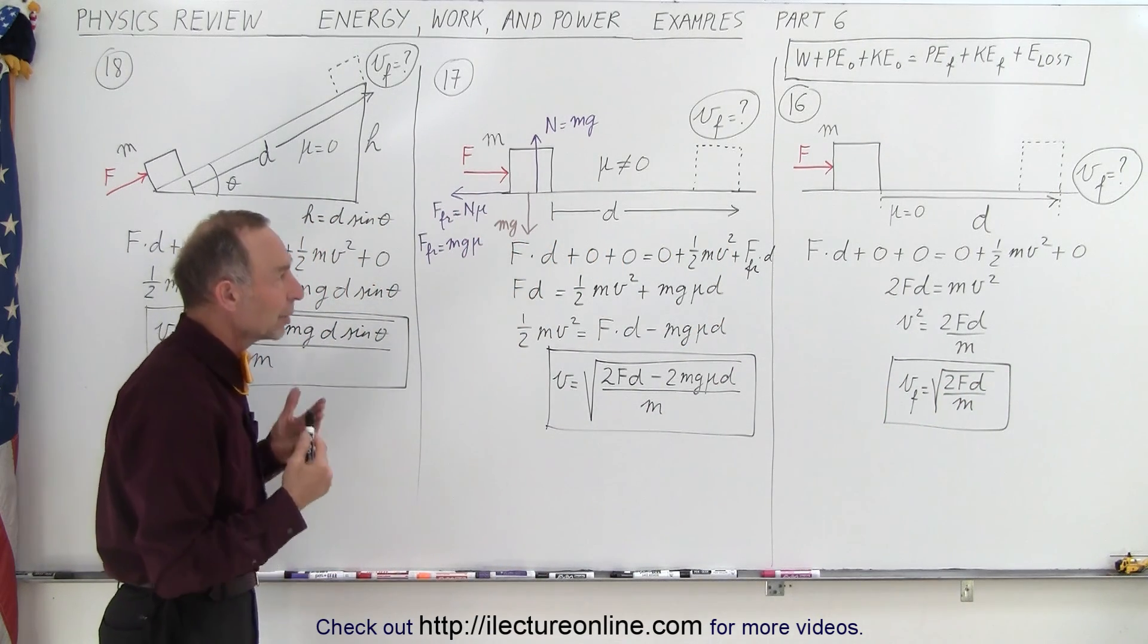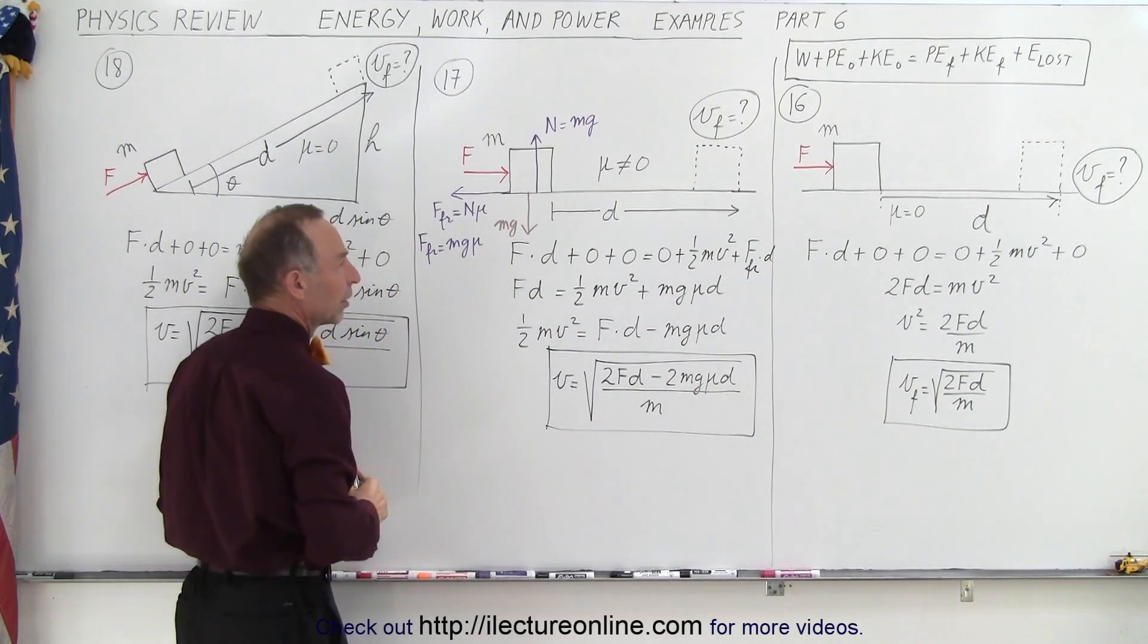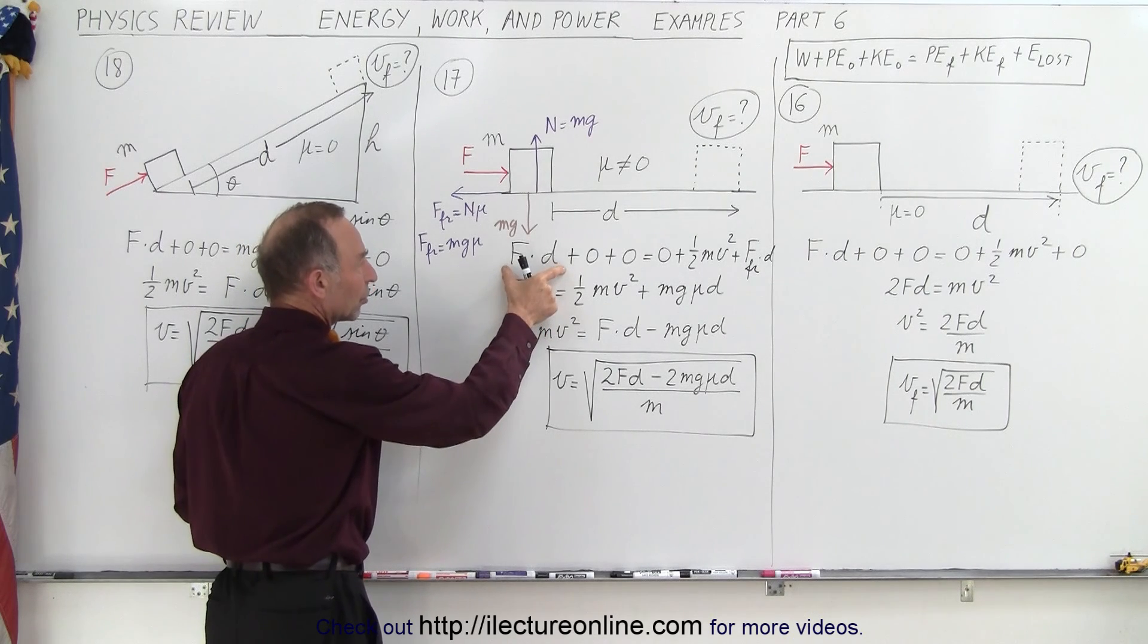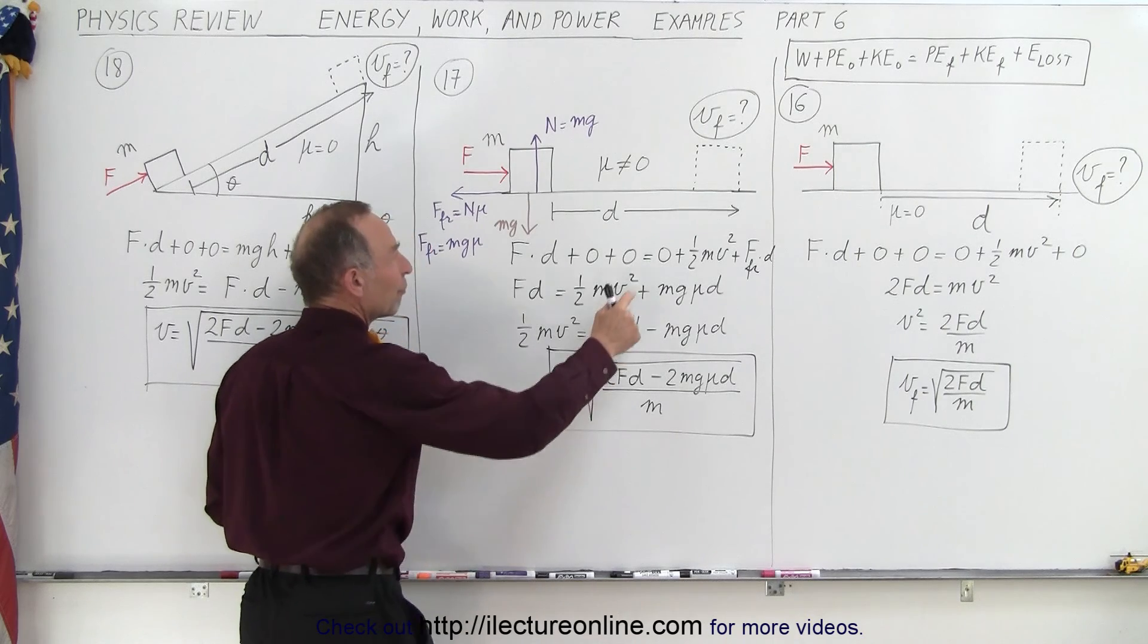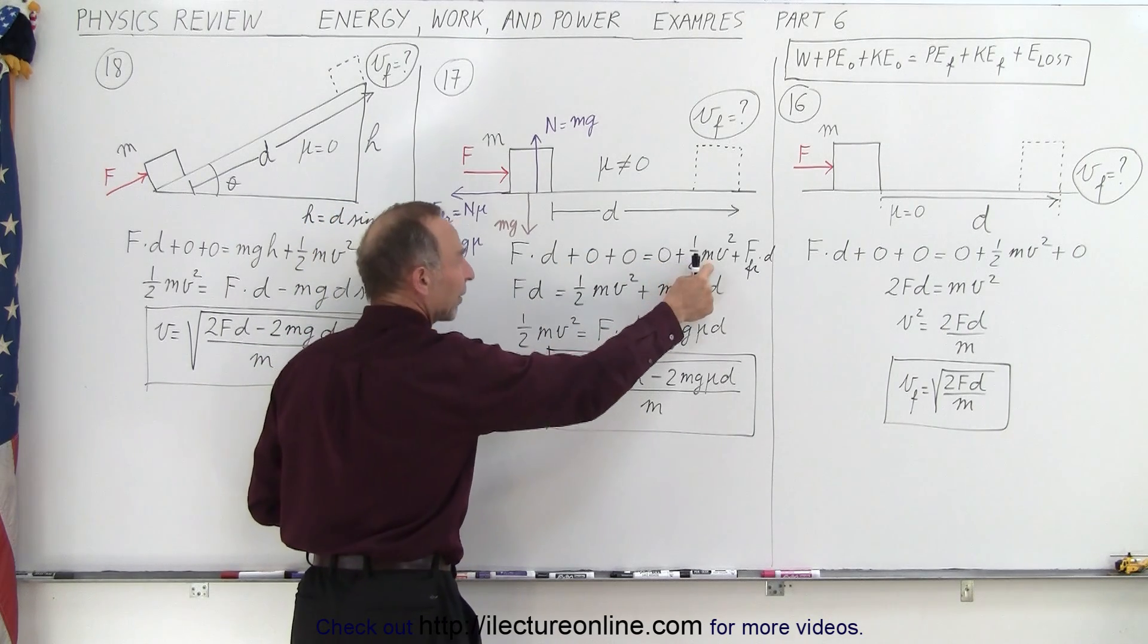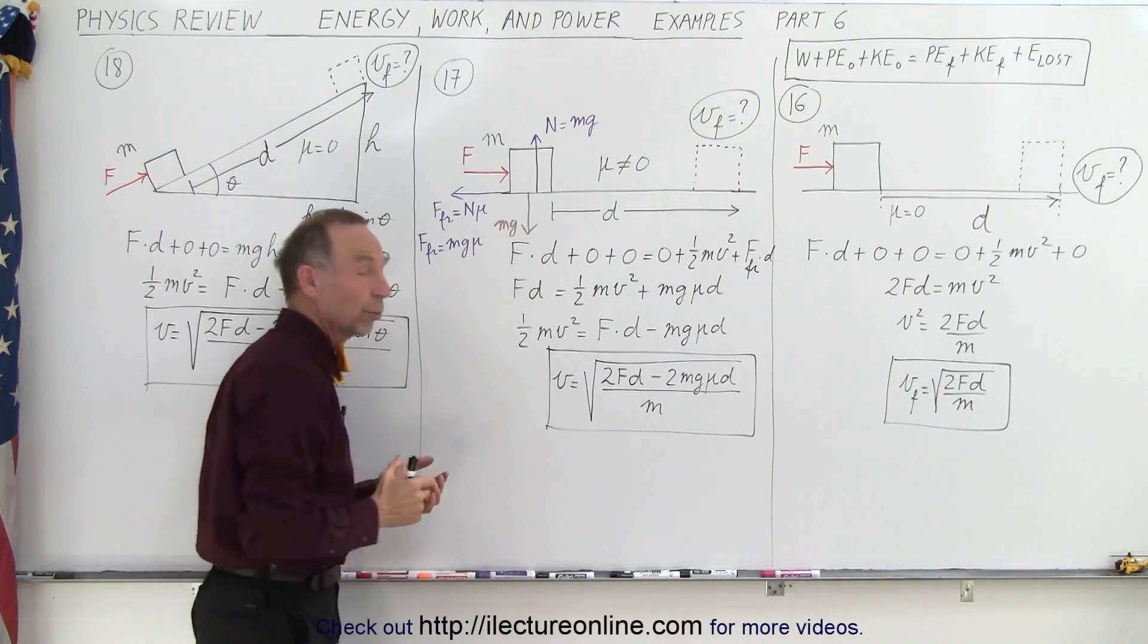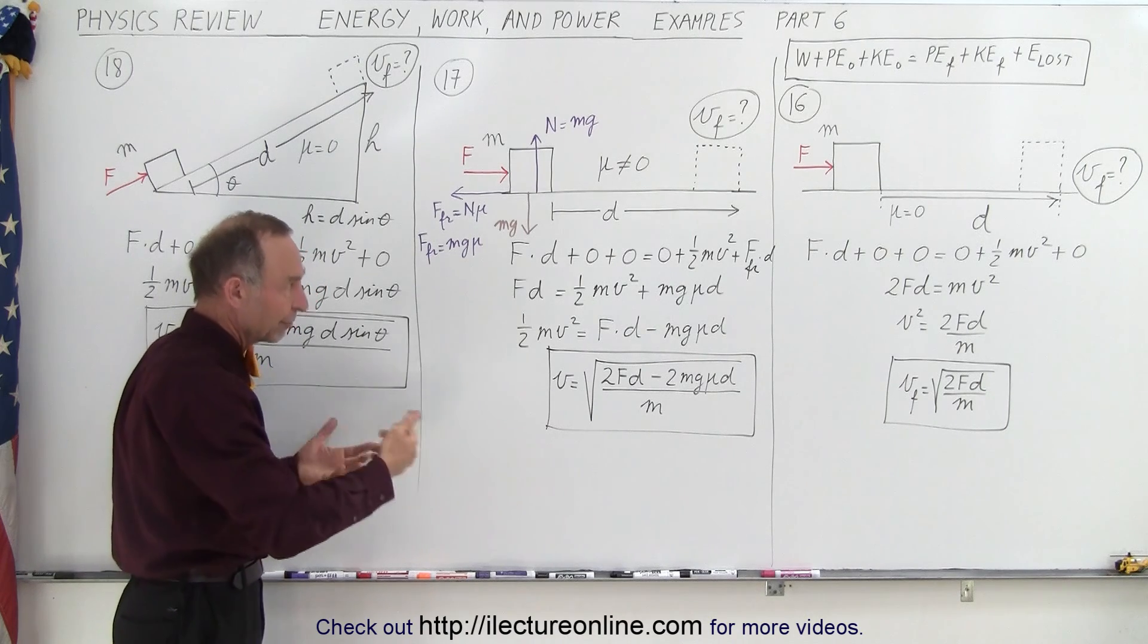Let's say we do the same problem again, but now there is friction involved. Notice there was no friction over there. So what is different now? The equation is exactly the same. The work put into the system with no initial potential or kinetic energy results in no final potential energy because no height is gained, some final kinetic energy, plus some energy lost due to the friction, which is the friction force times the distance traveled, the work done to overcome friction.